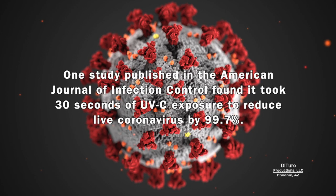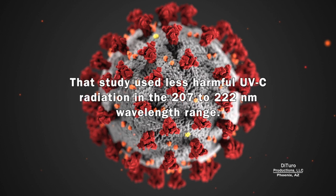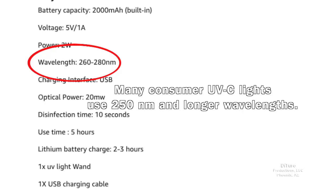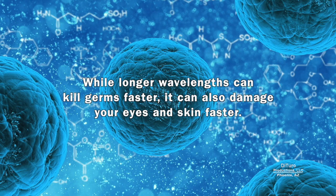One study published in the American Journal of Infection Control found it took 30 seconds of UVC exposure to reduce live coronavirus by 99.7%. That study used less harmful UVC radiation in the 207 to 222 nanometer wavelength range. Many consumer UVC lights use 250 nanometer and longer wavelengths. While longer wavelengths can kill germs faster, they can also damage your eyes and skin faster.